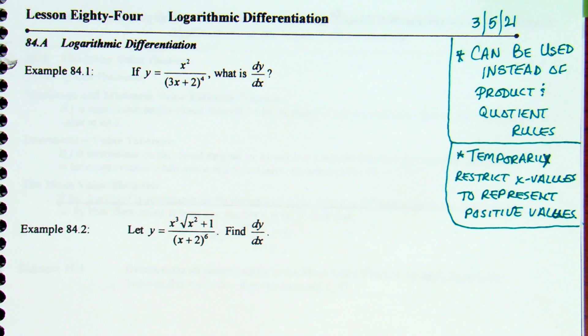What we're going to do instead — just like solving exponential equations — we're going to start by taking the log of both sides. Because we're going to have to take derivatives, and the natural log derivative is easier, generally speaking you do use natural logs to take the log of both sides of the equation.